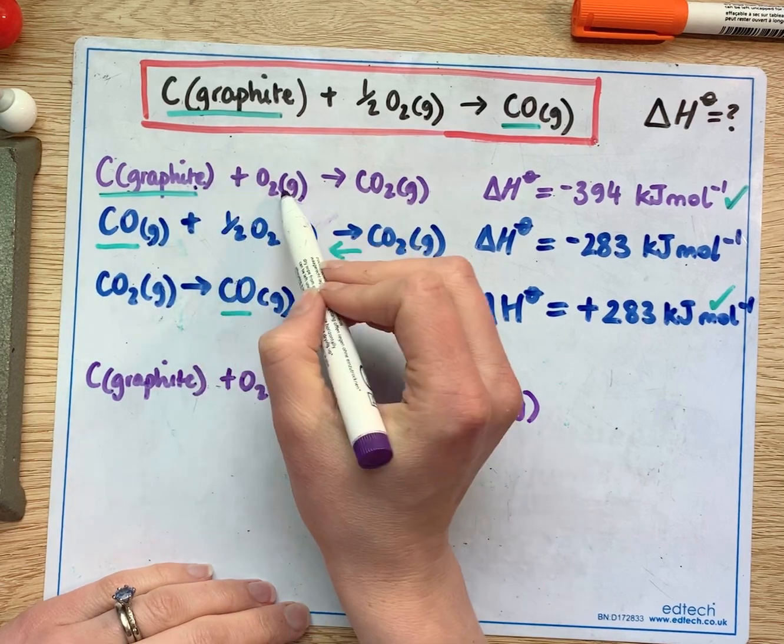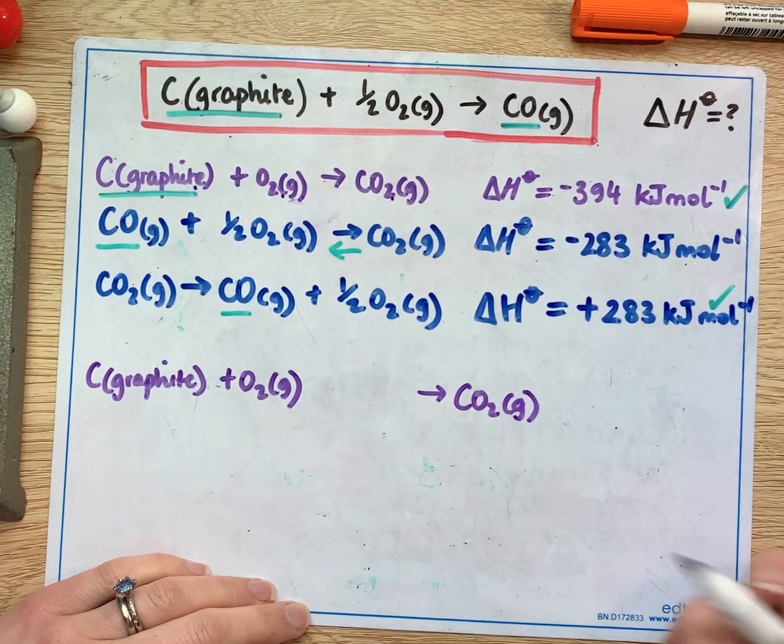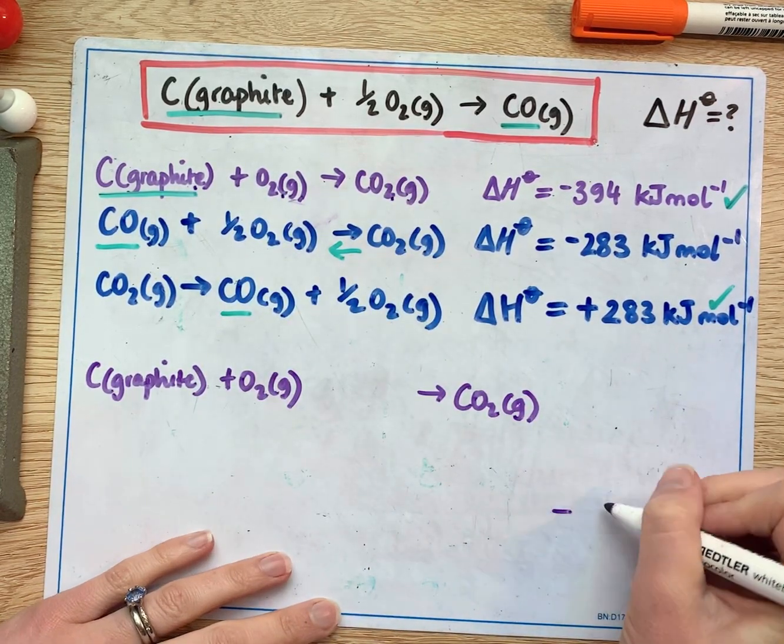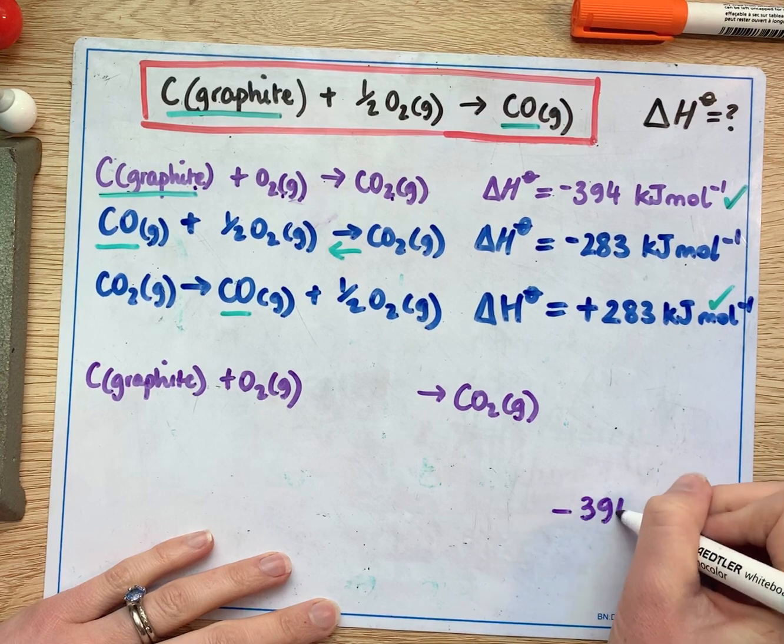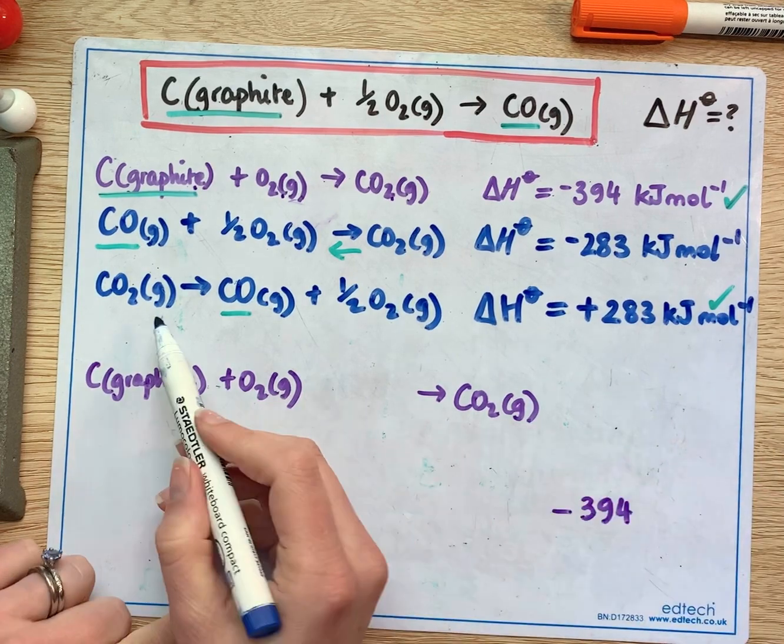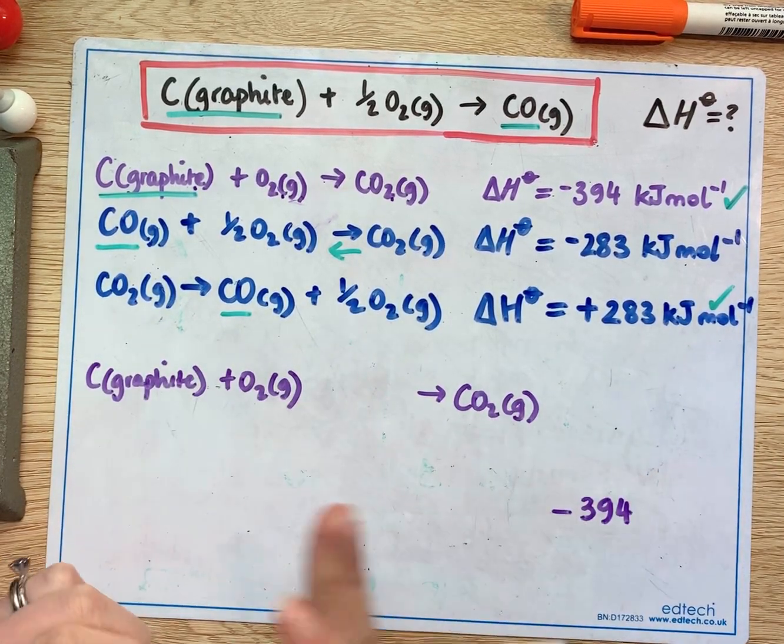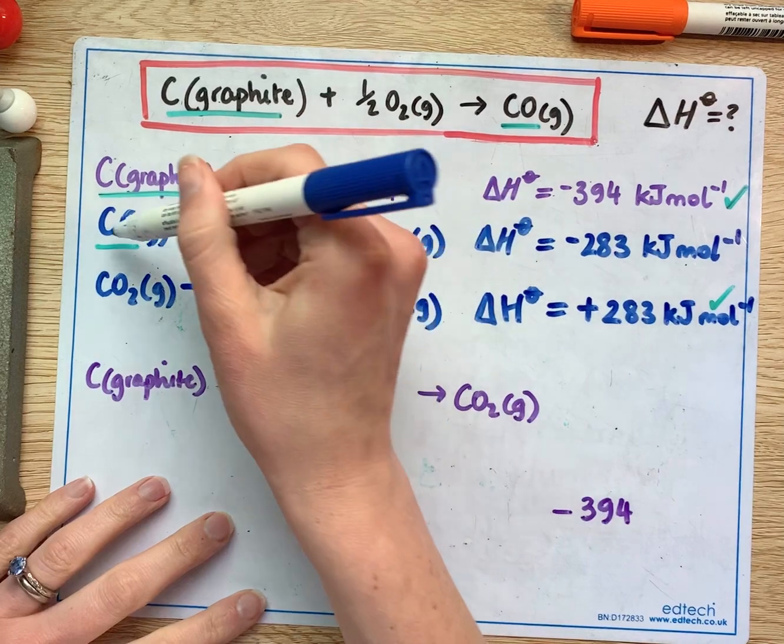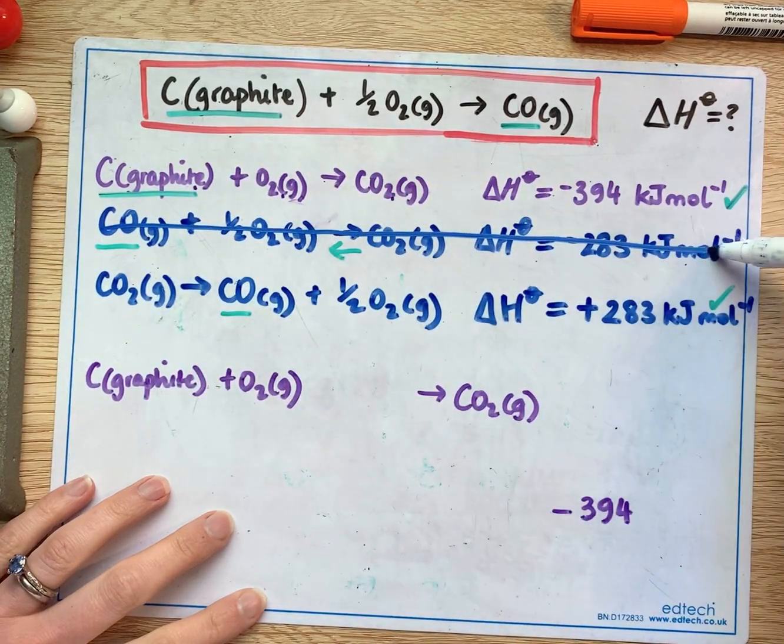I've ticked off all of these three things and that's minus 394 and now I'm only going to use this second version, this flipped version of this equation in blue so I don't need to worry about this one anymore.